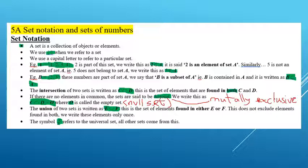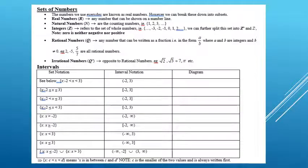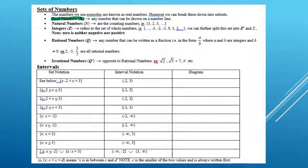Mathematicians are more interested in the sets of numbers we use in particular. The numbers we use every day are known as the real numbers. However, we can break these down into subsets. The real numbers use the symbol R, and represent any number that can be shown on a number line. The natural numbers — sometimes called counting numbers — are the first sort of numbers most people learn.